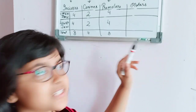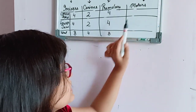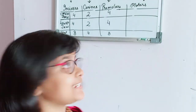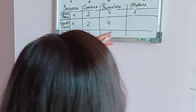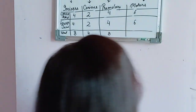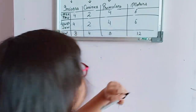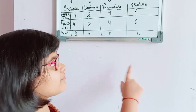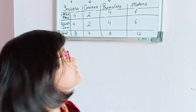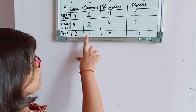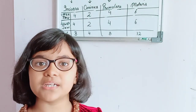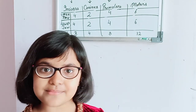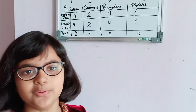Molars — there are six molars in each jaw, so twelve molars in total. Now if we add eight incisors, plus four canines, plus eight premolars, plus twelve molars, the total comes to thirty-two. That means in an adult's mouth there are thirty-two teeth.